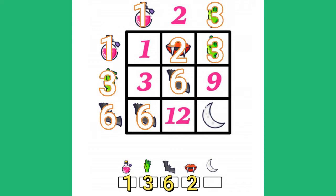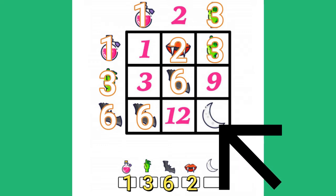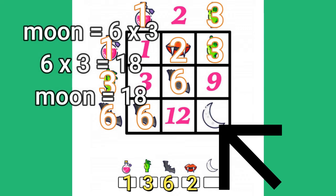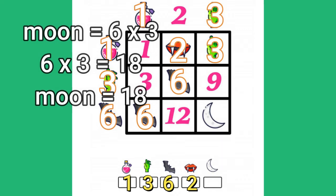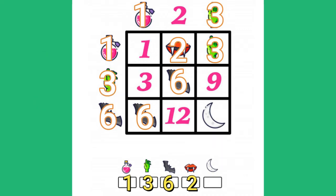And I can double check that because hand times hand equals 9. 3 times 3 equals 9. And let's look at the moon. Because bat is 6 and the hand is 3. 6 times 3 equals 18, which equals the moon.